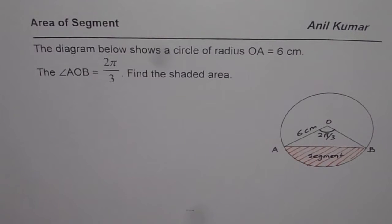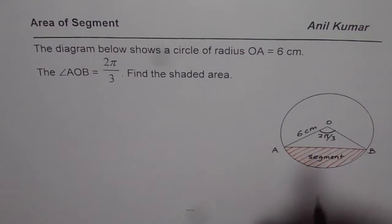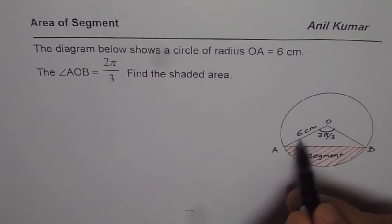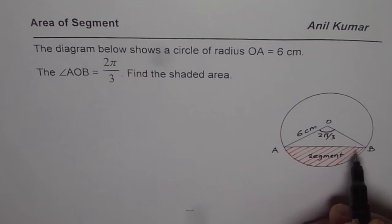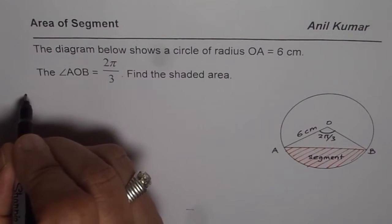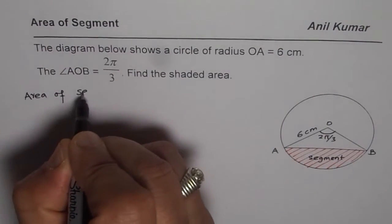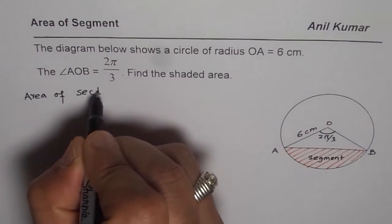So we will find area of the segment. Now to find the area of the segment you should first find the area of the sector AOB and then take away area of the triangle. So we have area of sector, let us find first area of the sector.